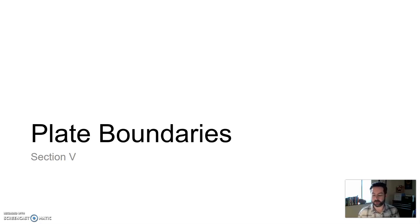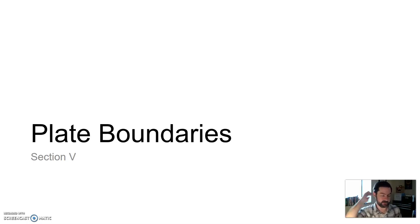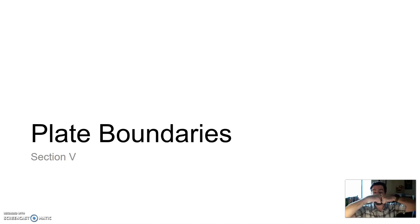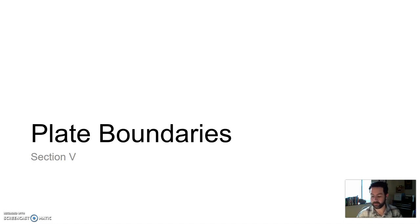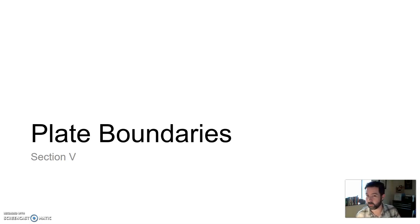Welcome back! As mantle convection is jostling these plates around, different plates interact in a few different ways. We can either pull plates apart, crash plates together, or sometimes they just move laterally side by side and grind past one another. These are all different types of boundaries. Not only are there three main types of boundaries, but it also depends on what type of crust is interacting.